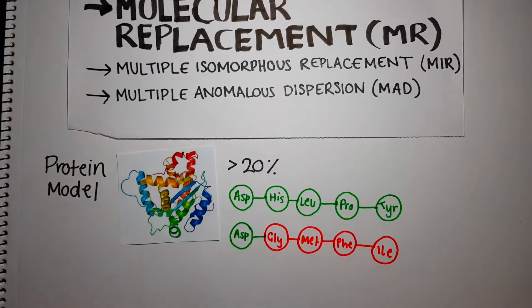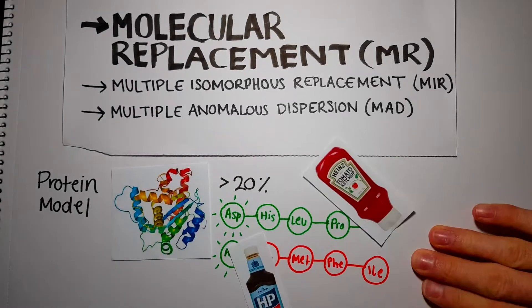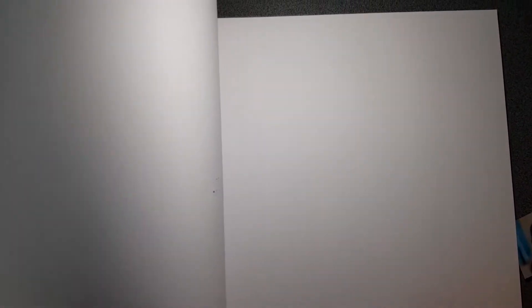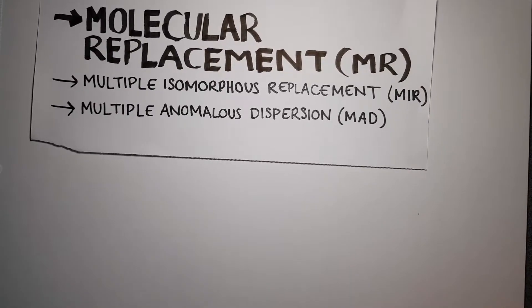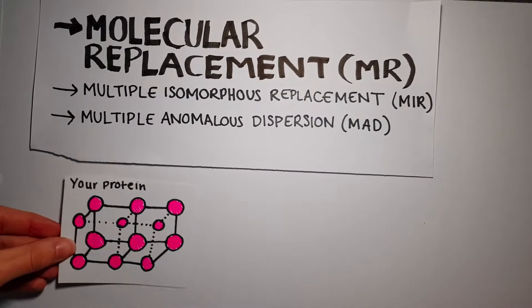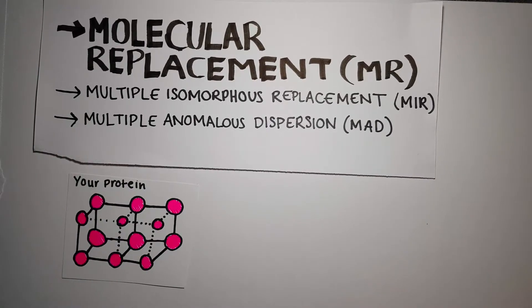For example, this occurs when the same enzyme is derived from two different sources, resulting in close sequence homology. Once you have a suitable model protein, molecular refinement programs can match its orientation with your crystal's orientation.